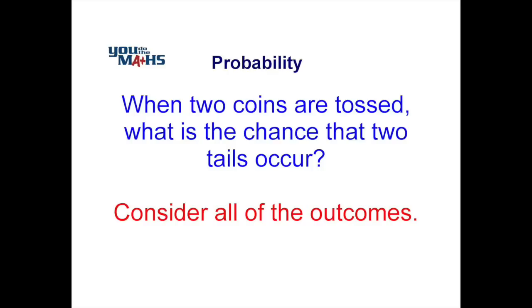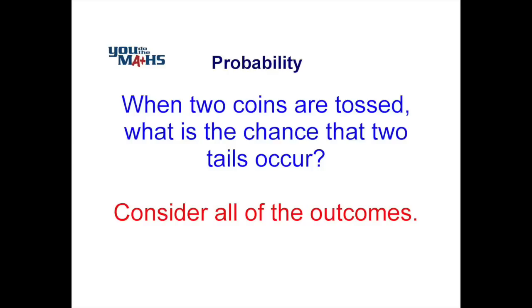Since it's a tree diagram, what we do is we look at the first coin. We know that when you throw one coin, there are two possibilities — there's a head or a tail — and we can see that in this diagram here. We've basically got branches of our tree.